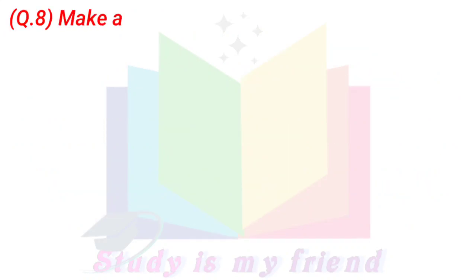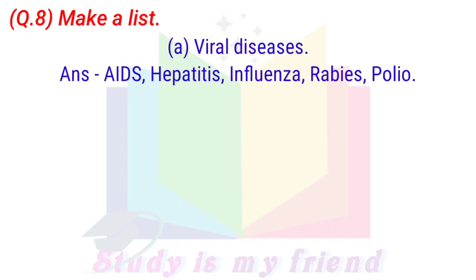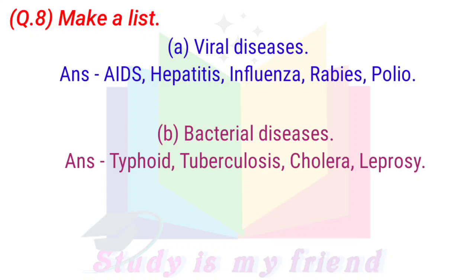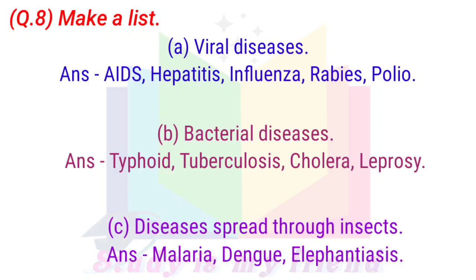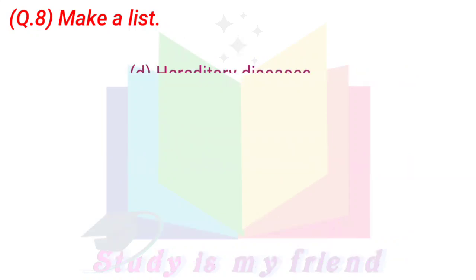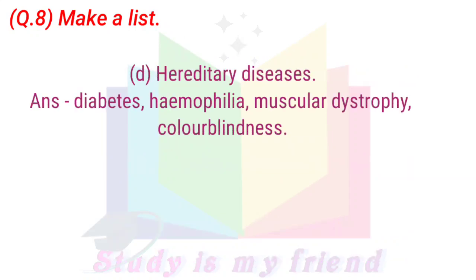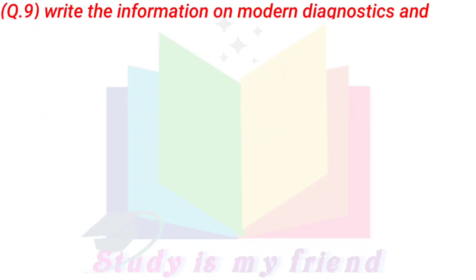Question 8: Make a list. A. Viral diseases. Answer: AIDS, Hepatitis, Influenza, Rabies, Polio. B. Bacterial diseases. Answer: Typhoid, Tuberculosis, Cholera, Leprosy. C. Diseases spread through insects. Answer: Malaria, Dengue, Elephantiasis. D. Hereditary diseases. Answer: Diabetes, Haemophilia, Muscular Dystrophy, Colorblindness.